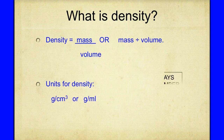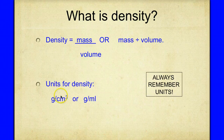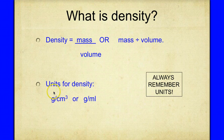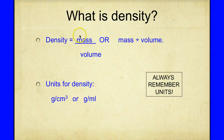In every calculation you have to have a unit. Our units for density will be grams per centimeter cubed, or grams per milliliter. Grams is our unit for mass and centimeter cubed or milliliter is our unit for volume — just like our formula, it's mass over volume.